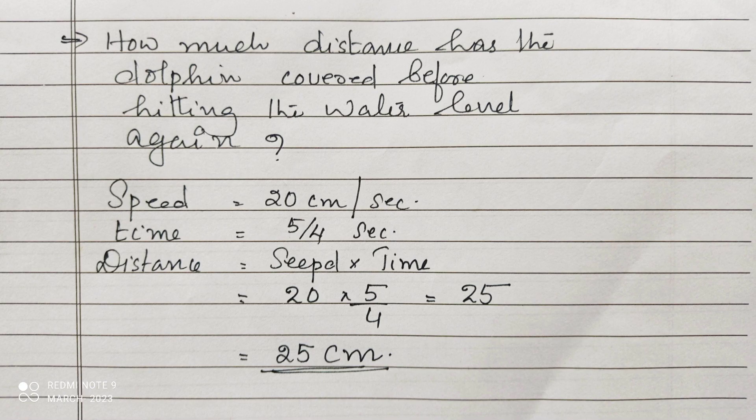And t we got as 5/4. Distance = speed × time. Substituting the values, the answer is 25. Therefore, the distance is 25 centimeters.